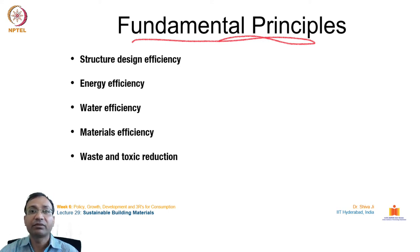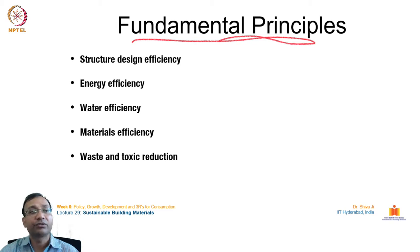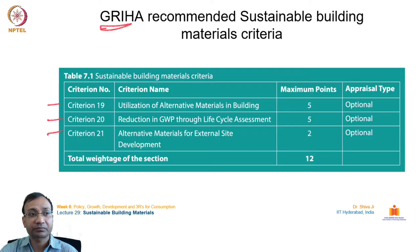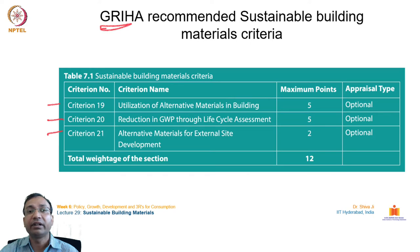Material efficiency means we can save on the bulk, on the manufacturing processes, and on the resources themselves. There are several advantages to saving on materials, and of course waste and toxic reduction. Let's see how the GRIHA rating method — Green Rating for Integrated Habitat Assessment — recommends sustainable building materials criteria in their framework.